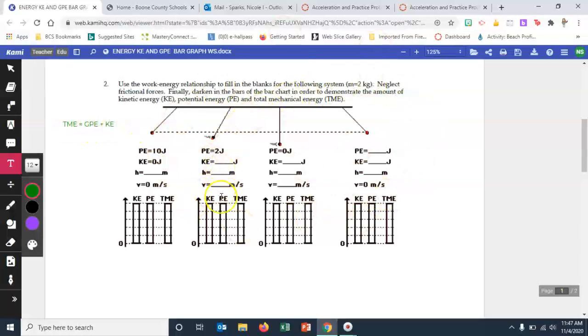So if we take a look at this situation that we have here, we have a pendulum, a ball on a string that is swinging across. We're going to use what we call our work energy relationship to fill in the blanks from the following system. The ball itself is two kilograms, which is an important piece of information, and we are going to just pretend that we are in a frictionless environment. So we're not going to worry about what kind of frictional forces are acting on the ball.